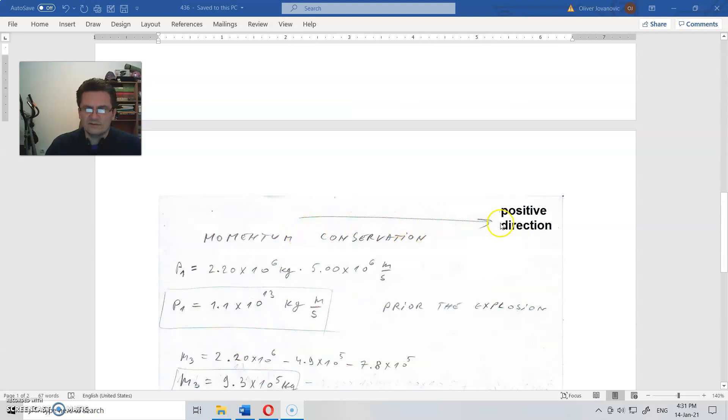Okay, we assume this to be a positive direction. Due to momentum conservation, this is prior to the explosion. This is the overall mass of the ship, this is the speed in this direction.